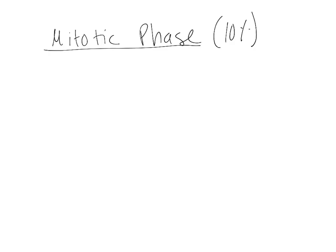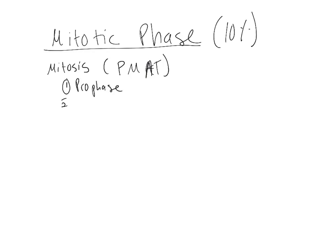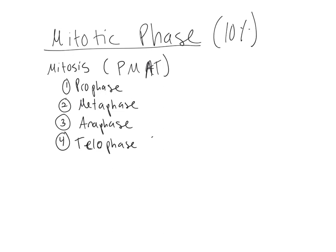So the cell has grown, duplicated its DNA, and grown some more. Now it's time for the climax of the cell cycle: the division part, which is only 10% of the entire cycle — the mitotic phase. The first step in the mitotic phase is mitosis, which is made up of what I refer to as PMAT — helping you remember the order of the steps, which are prophase, metaphase, anaphase, and telophase. Telophase comes from the Greek root 'telo,' meaning the end, which makes sense as the last step of mitosis. After telophase, we have something called cytokinesis.